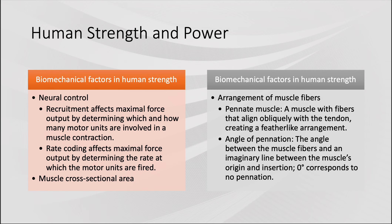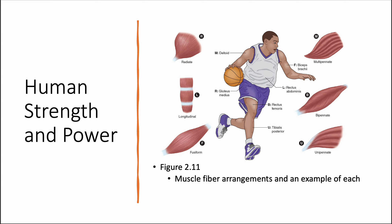Muscle cross-sectional area also matters — with the same neural control, a larger muscle will outperform a smaller one. Muscle fiber arrangement and the angle of pennation — the way fibers run within the muscle along an imaginary line — affects force production. A zero-degree pennation corresponds to no pennation; a 45-degree pennation changes the dynamic significantly. The rectus femoris, for example, has pennation angles that are not straight up and down, making it one of the strongest muscles in the body.